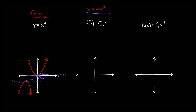The other thing you need to be able to find is the axis of symmetry, which basically just splits your parabola in half, and it always runs through the vertex. For this one, the axis of symmetry runs straight on top of the y-axis, so it's at x is equal to zero. For the other one, the axis of symmetry goes right through the vertex at about x is equal to negative two point five.